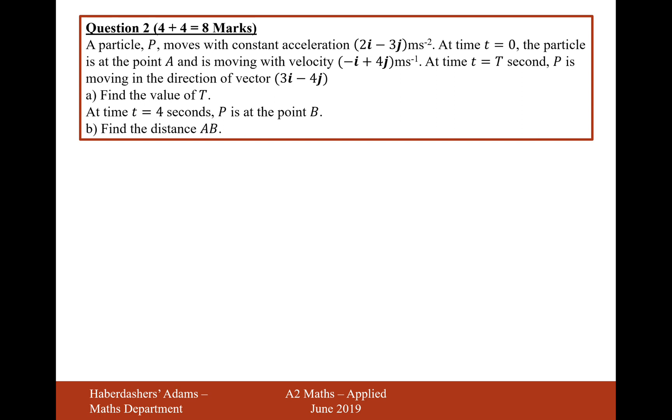A particle P moves with constant acceleration 2i-3j. At time t equals 0, the particle is at point A and is moving with velocity -i+4j. At time t equals T seconds, P is moving in the direction of vector 3i-4j. That's not its final velocity, it's just the final direction of its velocity. Find the value of T.